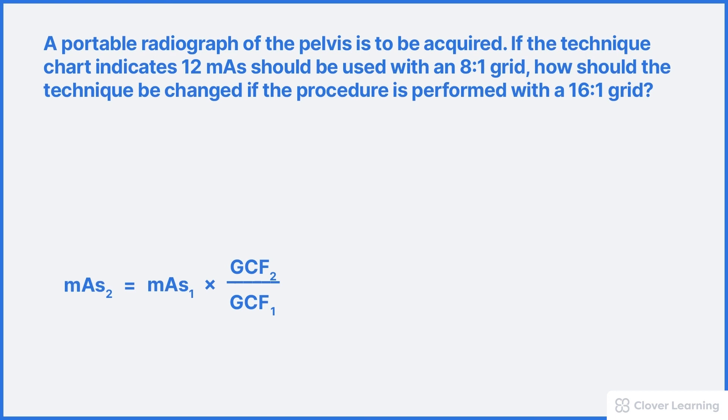Start with the formula and we'll insert all known variables. mAs2 equals mAs1 times grid conversion factor 2 divided by grid conversion factor 1. The prescribed mAs according to the technique chart is 12. The new grid conversion factor for a 16 to 1 grid is 6. The original grid conversion factor for an 8 to 1 grid is 4. So to calculate the new mAs, we just follow the math that's in this formula. The new mAs, that's mAs2, is equal to 12 times 6 divided by 4 which equals 18 mAs.